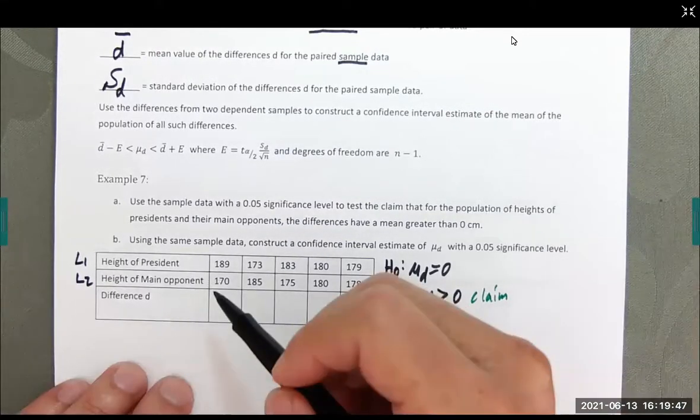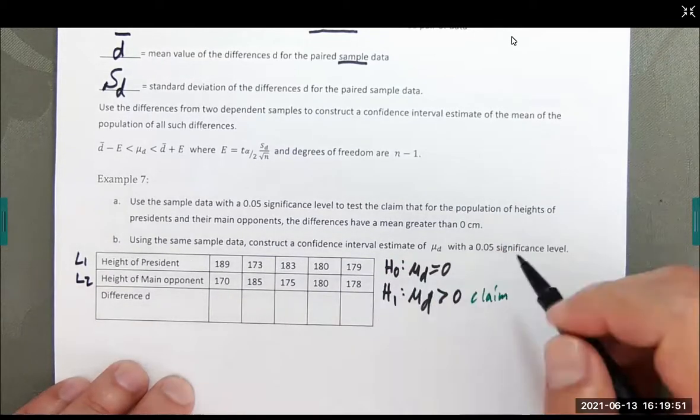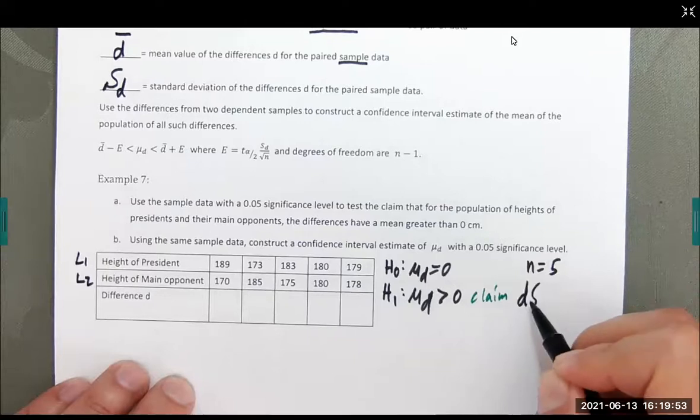And we have that n in this case is the number of pairs. So, one, two, three, four, five. So, n equals five, degrees of freedom is going to be four.